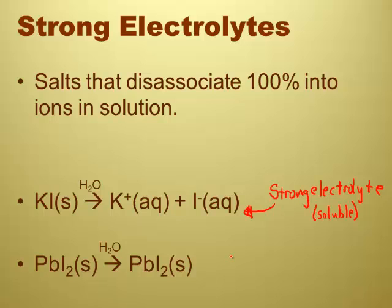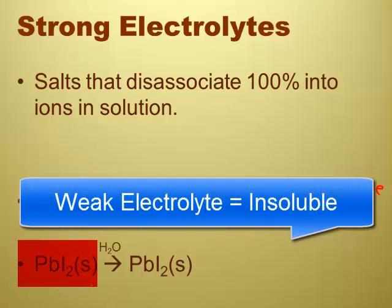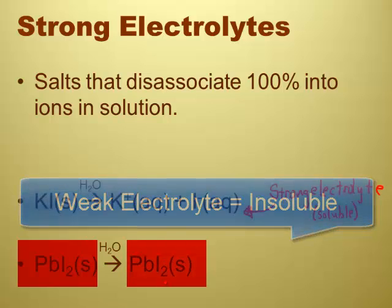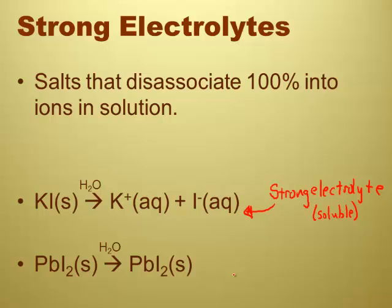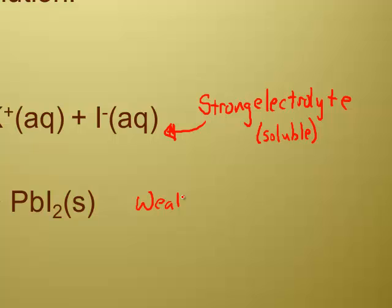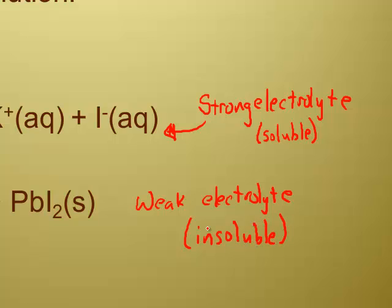Weak electrolytes will not dissociate 100% into ions in solution. So when you take lead iodide and put it in water, it doesn't dissociate into the lead and the iodide ion — it stays solid as lead iodide. It might dissociate just a bit, but it's not going to dissociate 100%. The 100% is the key to this definition. So we call lead iodide a weak electrolyte, and according to solubility rules it is insoluble. Anything that's insoluble is a weak electrolyte. Anything that's soluble is a strong electrolyte.